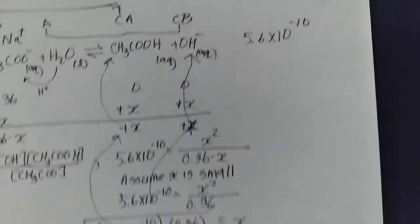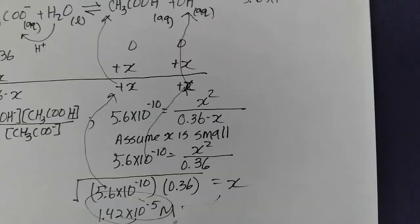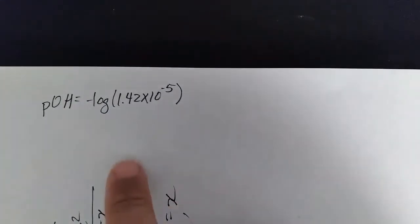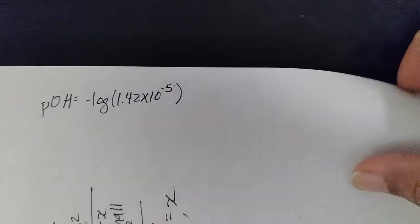Instead of calculating the pH directly, we'll first calculate the pOH. So pOH is minus the log of the concentration of the OH-. We calculated the OH- because that was x.